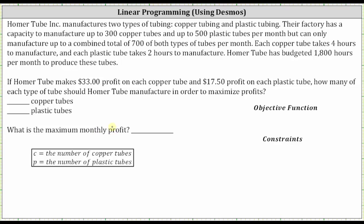Let's begin by defining the variables. We will let C equal the number of copper tubes and lowercase p equal the number of plastic tubes.